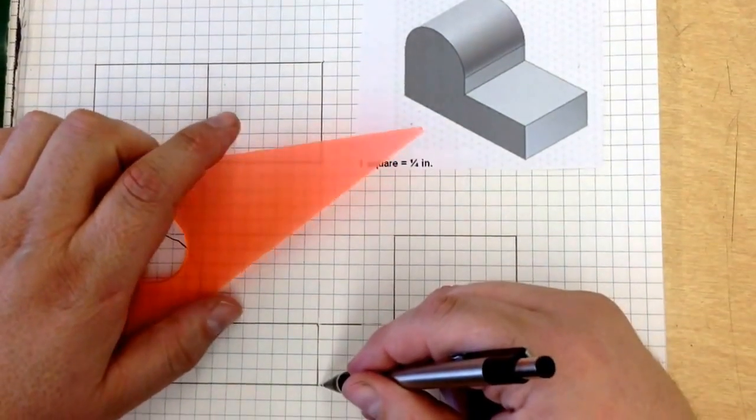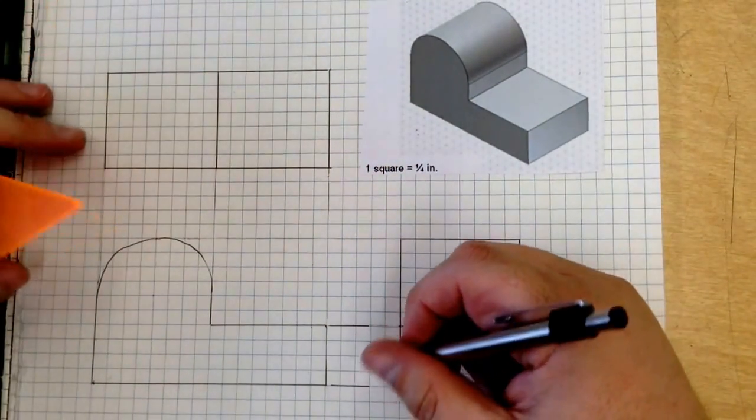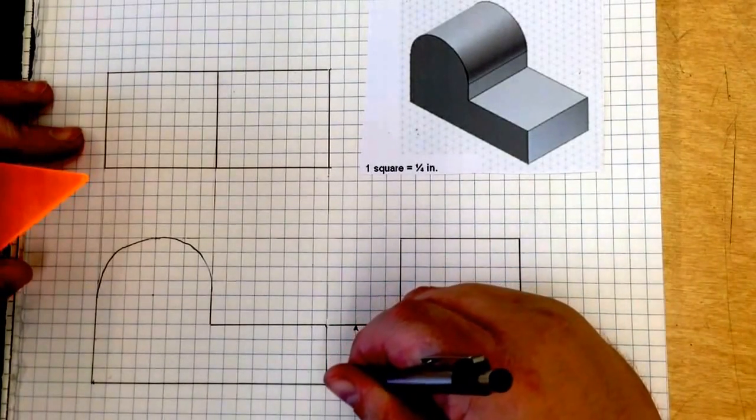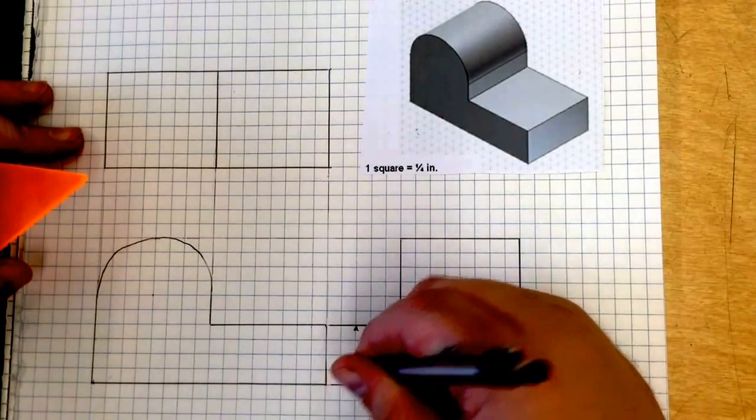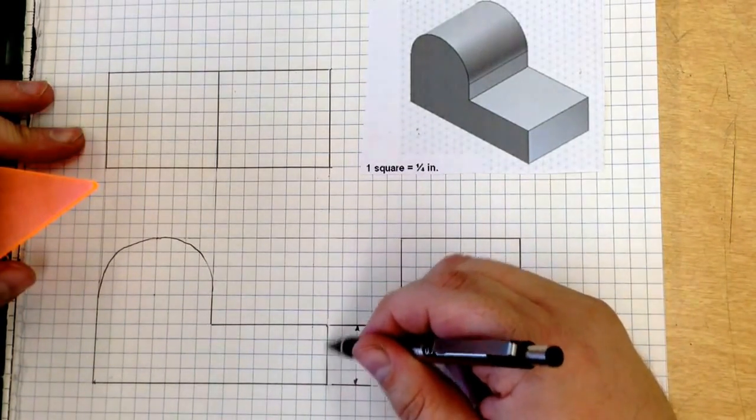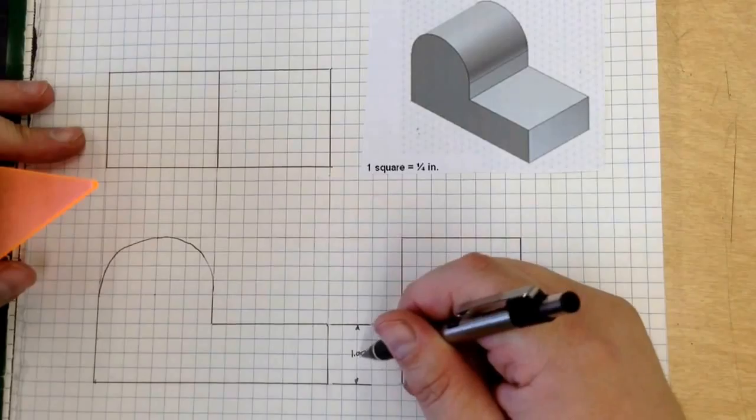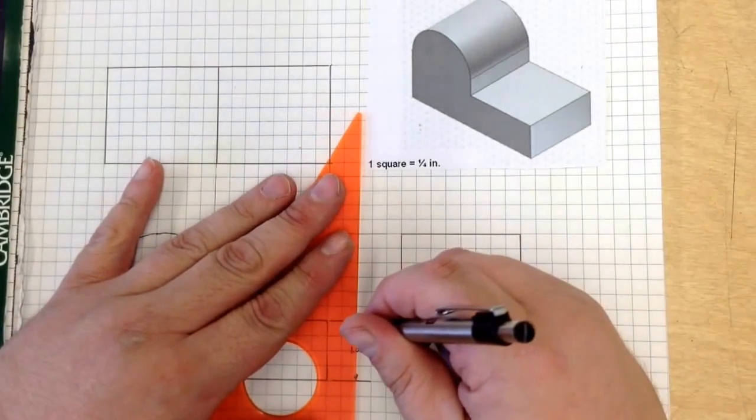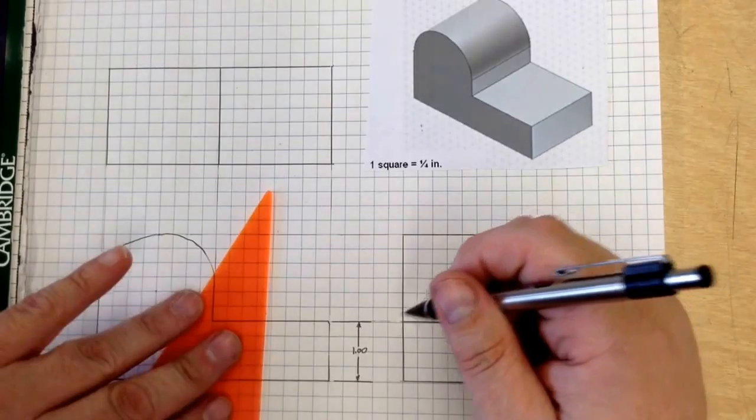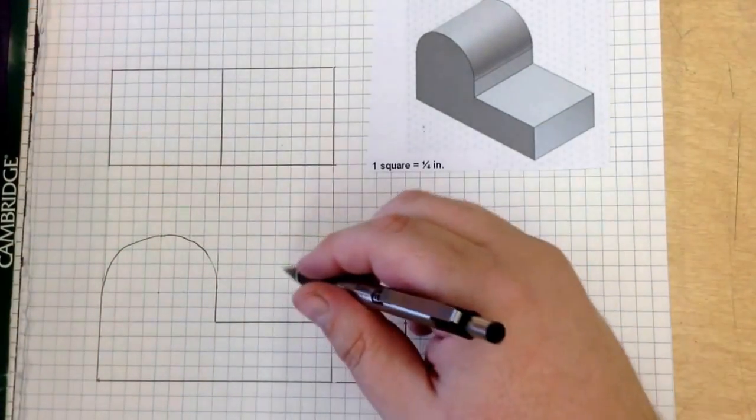You want to make sure your dimension lines do not touch your object lines. And knock out a small triangle right there. And it is 1.00. Each square is a quarter of an inch, so four of them is one. Now I'll just bring this down. And that's our first dimension right there.